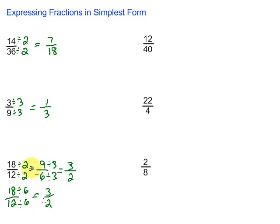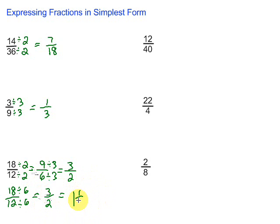We still have that improper fraction, so we need to do something about that. If we have an improper fraction, we take the bottom number and see how many times we can take it out of the top number. How many 2's can we get out of 3? Well, there's 1 — so that's our whole number. Then, how many do we have left after taking that 2 out of 3? We have 1 left. So we have 1 and 1 half as our mixed number.